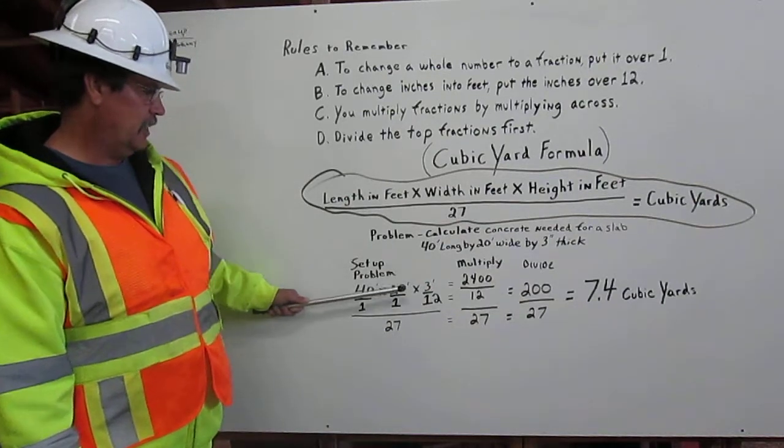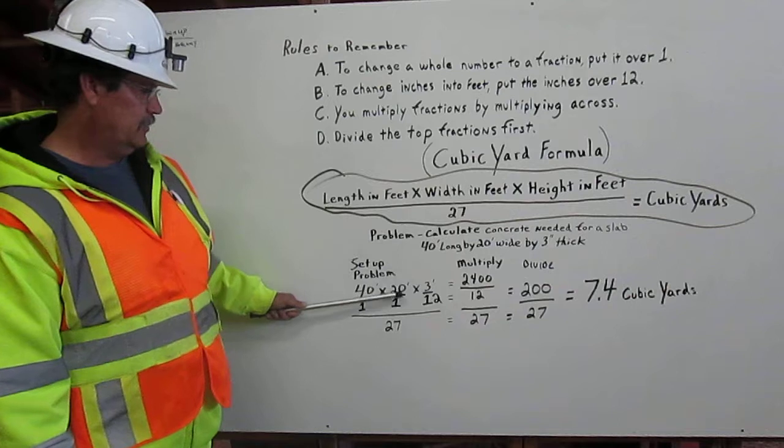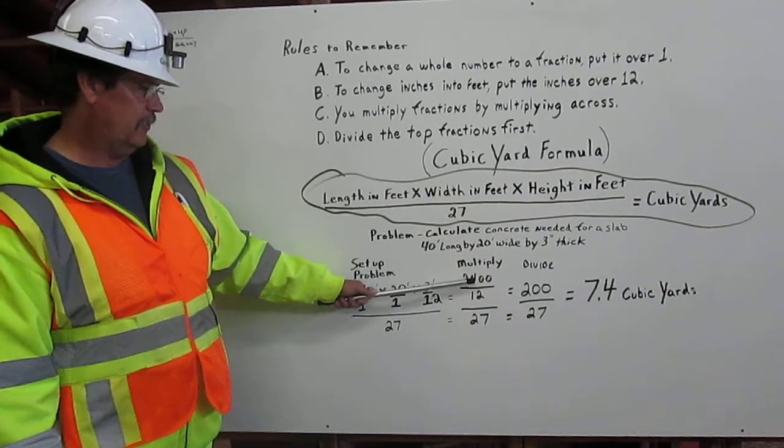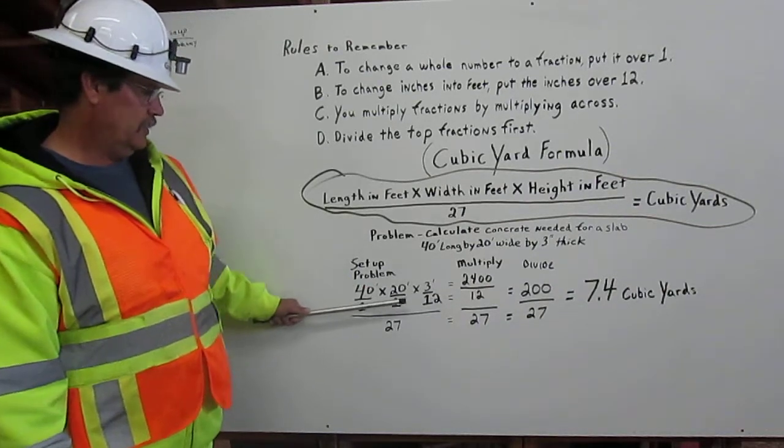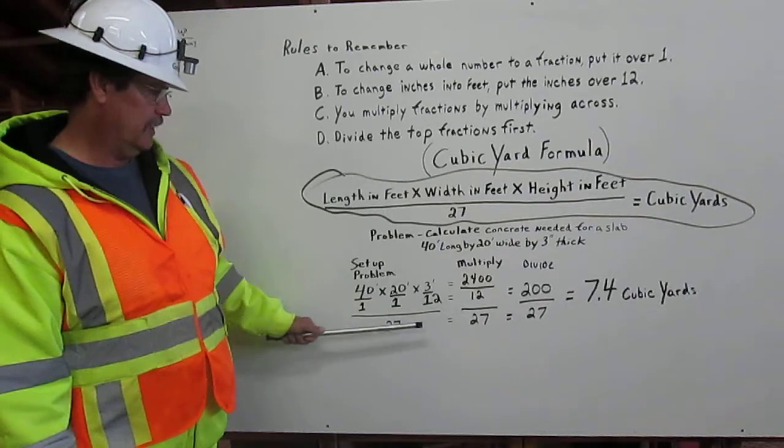We multiply this across. You get forty times twenty times three is two thousand four hundred. One times one times twelve is twelve, and you bring the twenty-seven over.